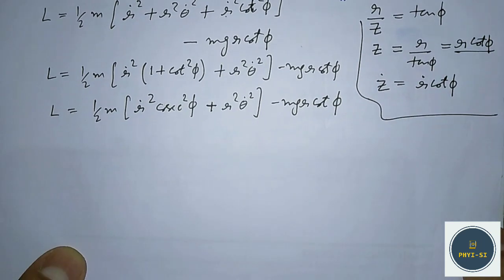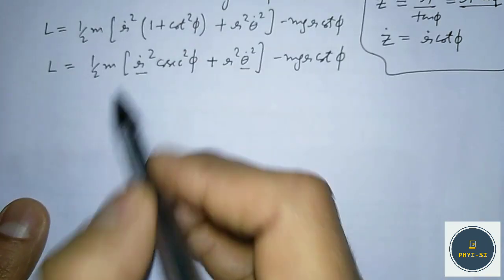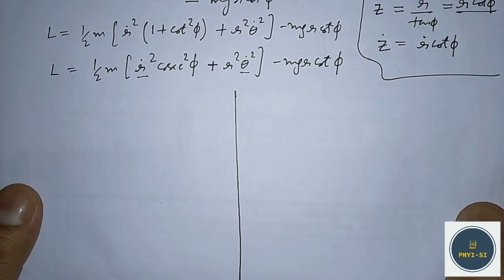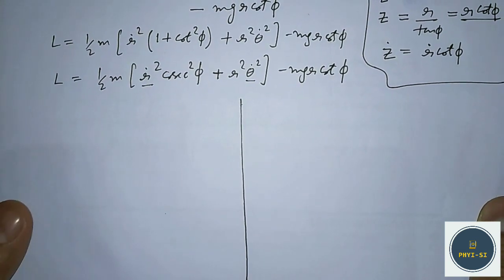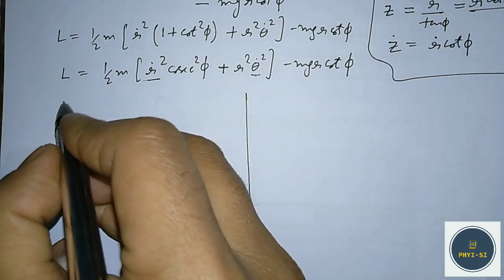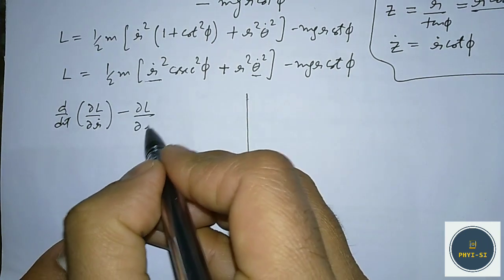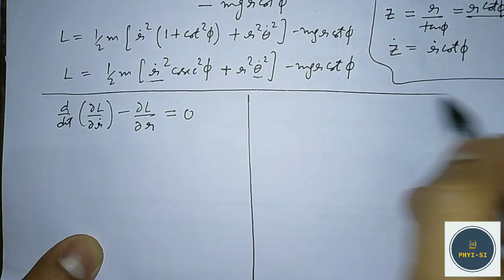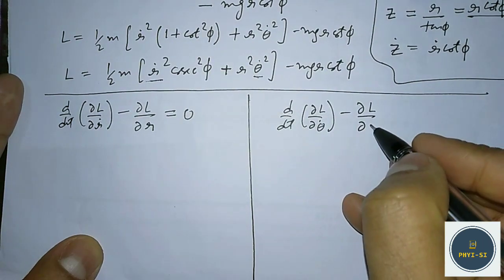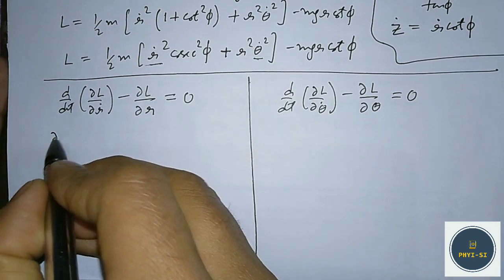We now have two generalized coordinates: R and θ. We will derive two equations of motion. The first is d/dt(∂L/∂ṙ) − ∂L/∂r = 0, and the second is d/dt(∂L/∂θ̇) − ∂L/∂θ = 0.